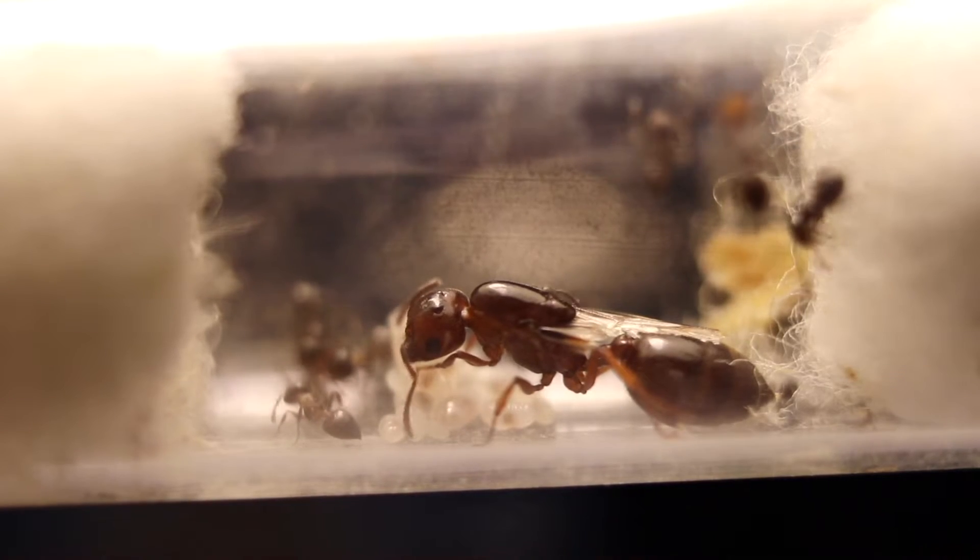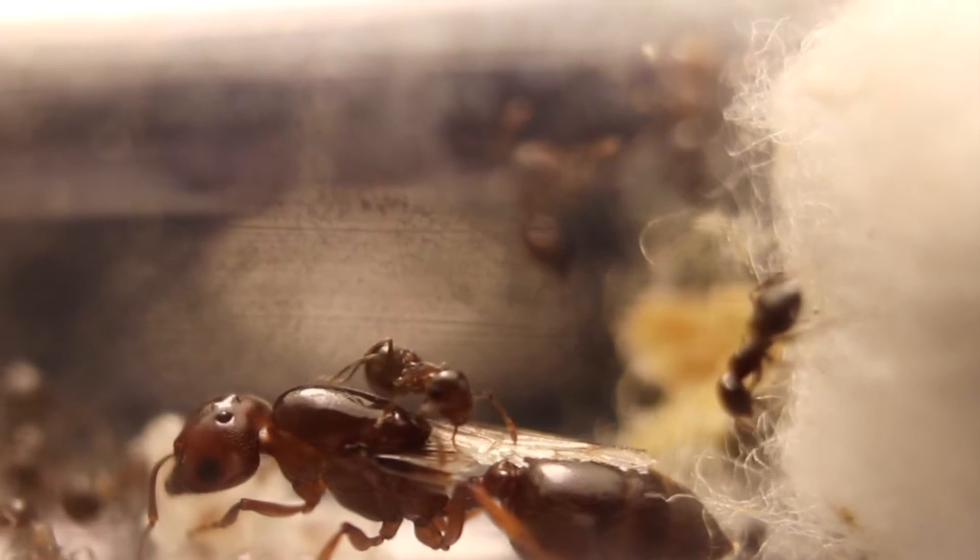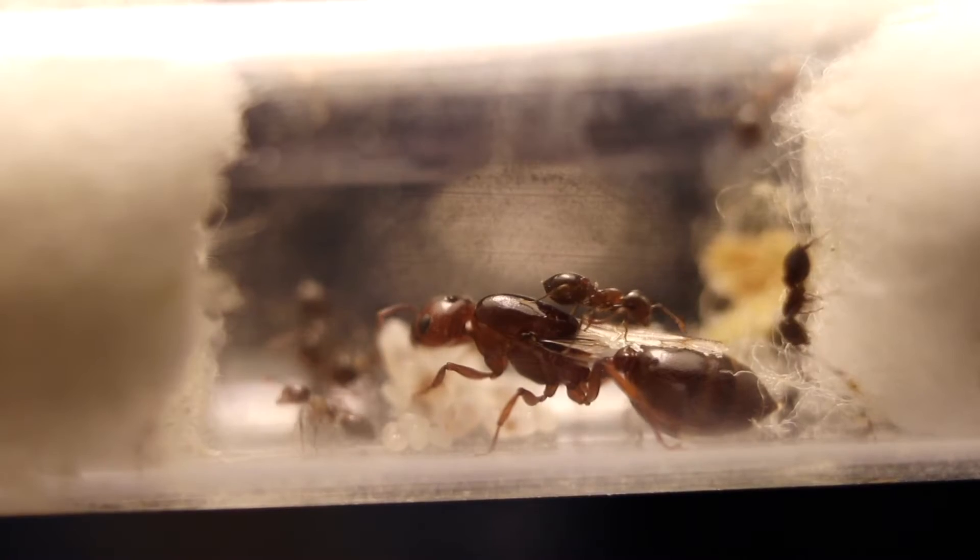Gripping to the glass seems like a universal type of thing for most ants at least, since it also happens with my Chromatogaster colony. I mean, just look at that fall.